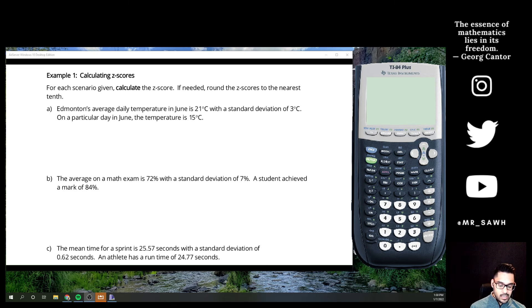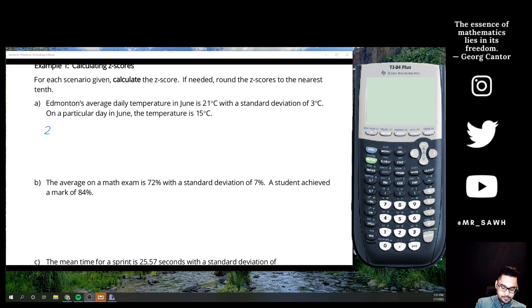So given a scenario, we're going to go calculate the z-score, where we would be left side of the average or right side. It'll tell us if it's positive or negative. So if needed, round them to the nearest tenth. This first one says Edmonton's average daily temperature in June is 21 degrees Celsius with a standard deviation of 3 degrees. On a particular day in June, the temperature is 15. So if we're going to calculate the z-score for this specific scenario, really we're looking at comparing this specific temperature day relative to the average.